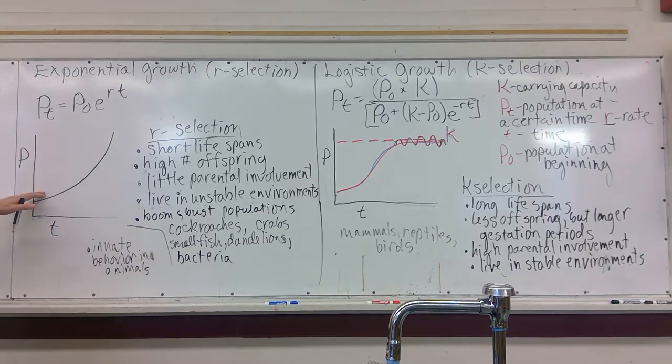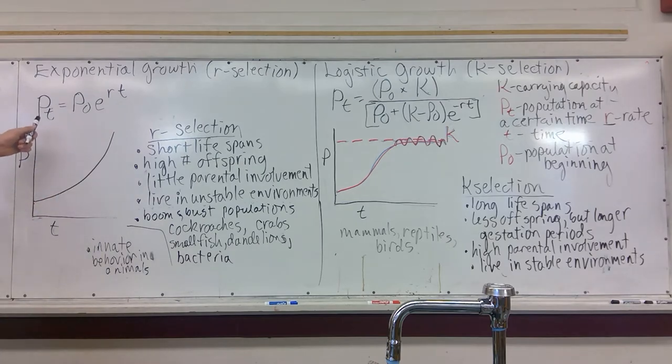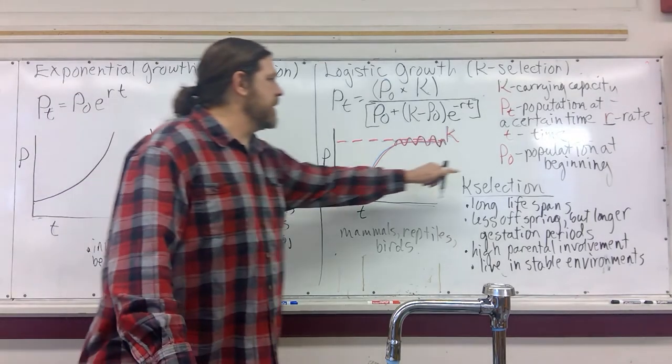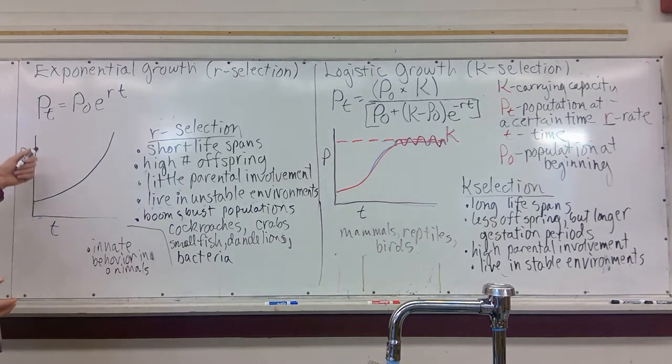And we can model their growth, more or less, at least for a certain amount of time, with this equation where we take our initial population, we call that P-naught. So let's say we start looking at the population at whatever point in time, so that would be right here at the axis on the P-t, population over time graph.